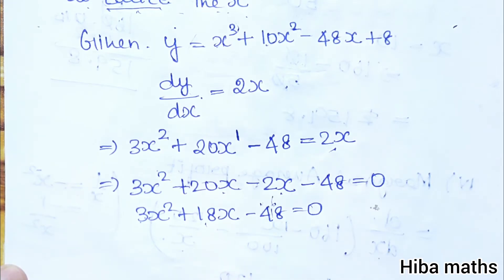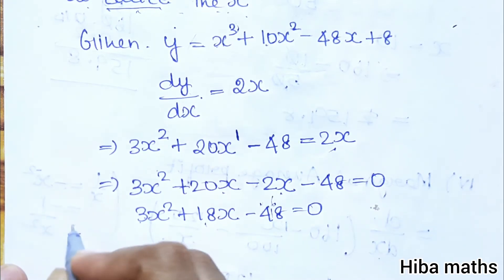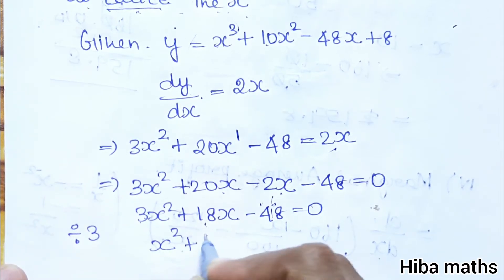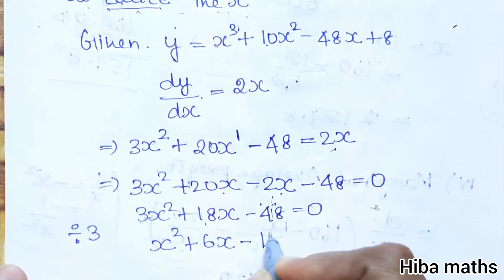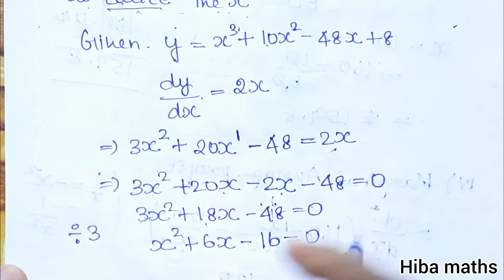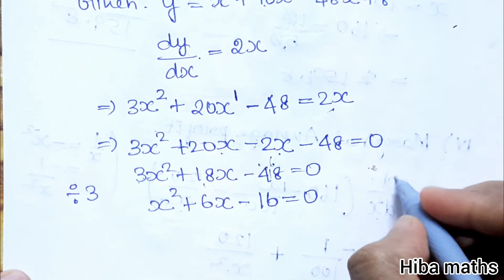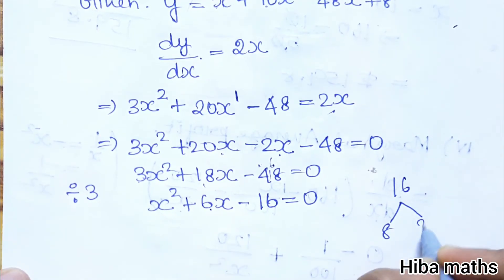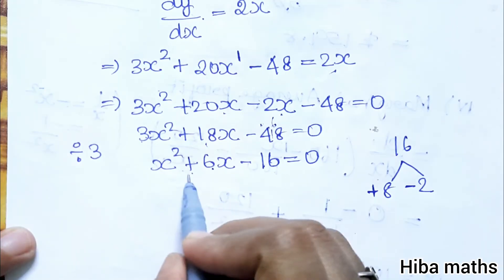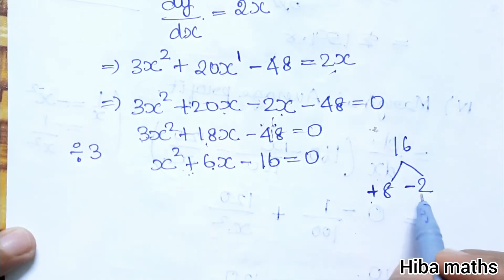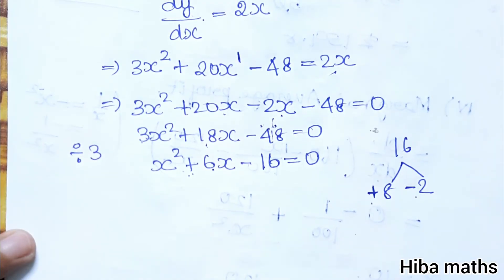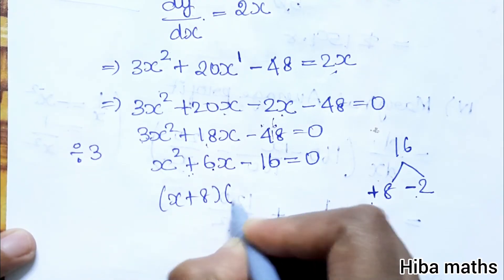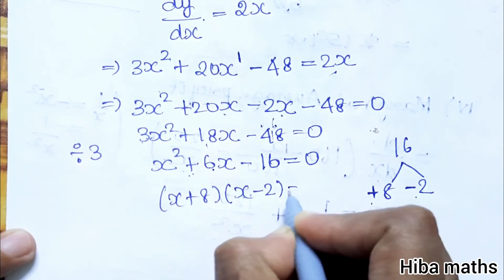Now dividing the equation 3X squared plus 18X minus 48 equals 0 by 3 — all three terms are divisible by 3 — giving X squared plus 6X minus 16 equals 0. We can now factor this quadratic: looking for two numbers that multiply to 16 and differ by 6.